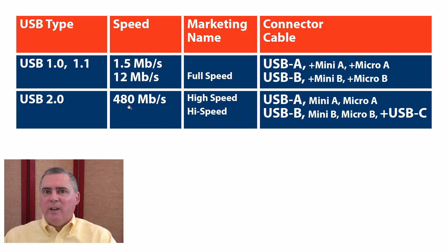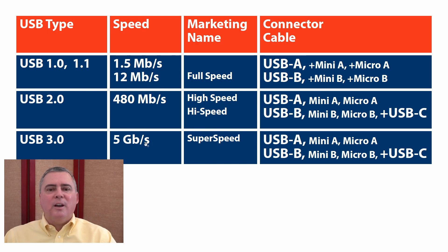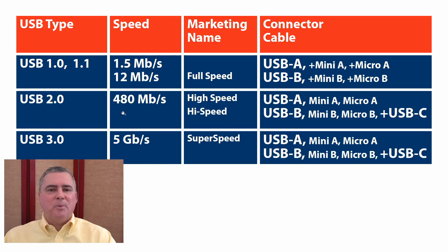USB 2.0 went to 480 megabits per second, which at the time seemed extremely fast — now it seems slow. High Speed is the marketing name. You can even see a USB-C connector using a USB 2.0 connection. Then USB 3.0 was much faster at 5 gigabits per second. Remember, it takes a thousand megabytes to get to one gigabyte, so 480 megabits is about half a gigabit — and we went from about half a gigabit to five gigabits, a much greater speed. It's called Super Speed, and it brought all the different connectors.